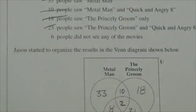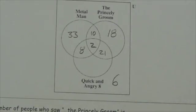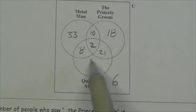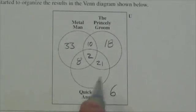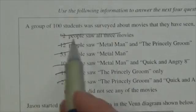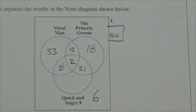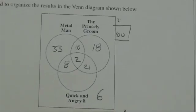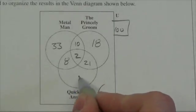Six people did not see any of the movies, so those people are out here - six. Now we're left with a subset that I haven't filled in yet. I know there are 100 people total. When I add up all the values - 33, 10, 18, 8, 2, 21, and the 6 outside - that gives me 98 total. So this little subset here must be two people to bring that up to 100.